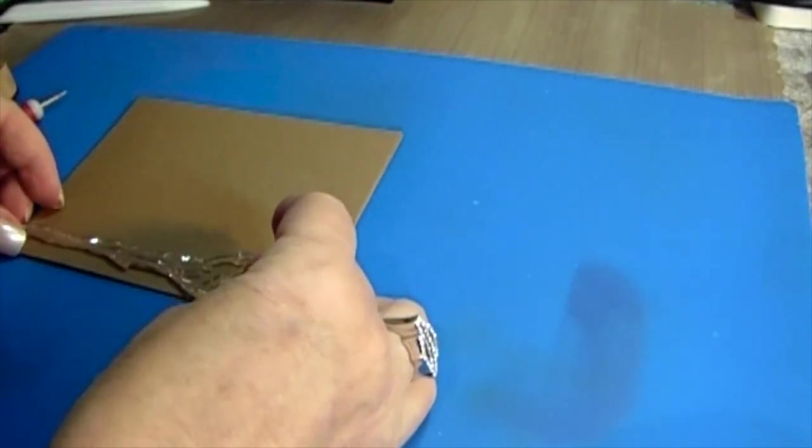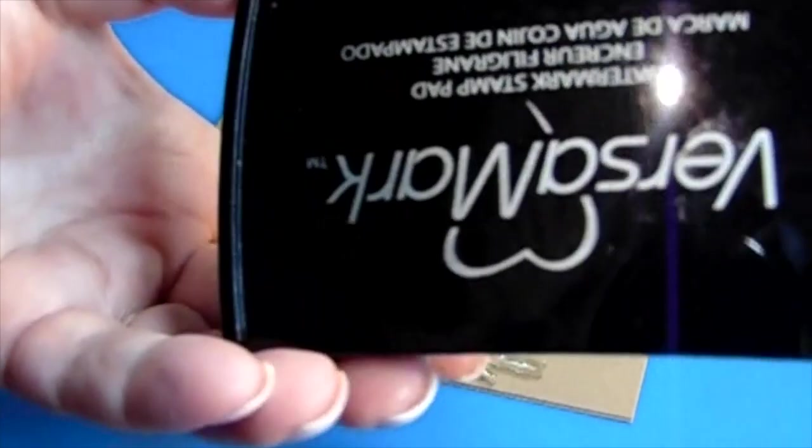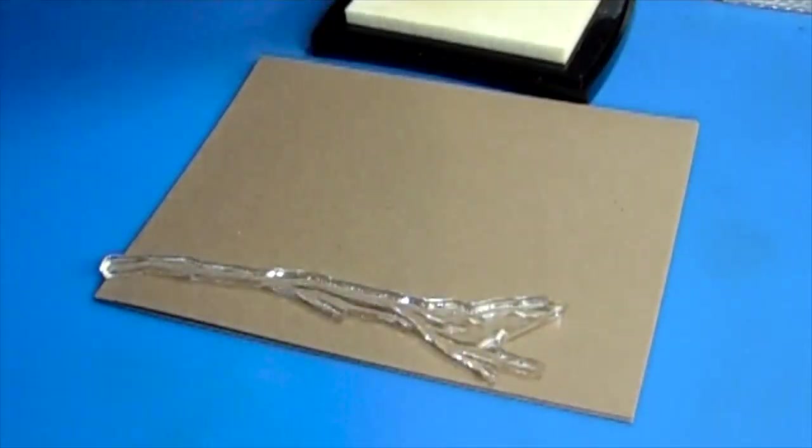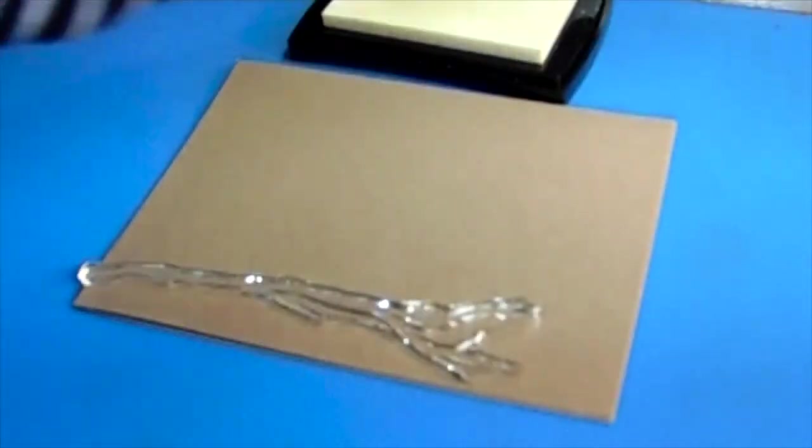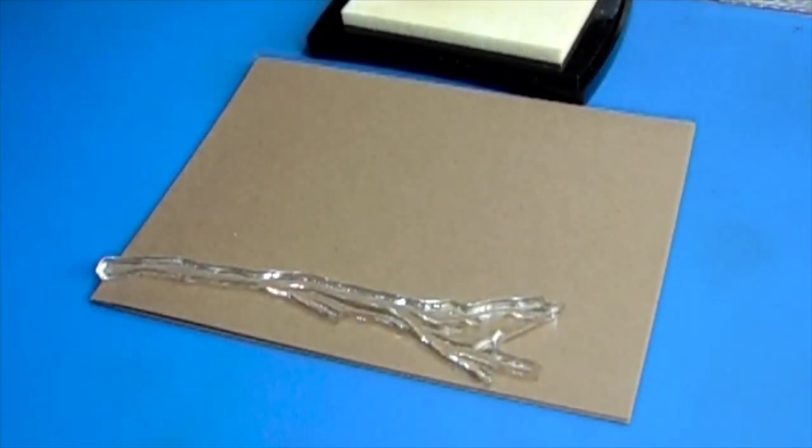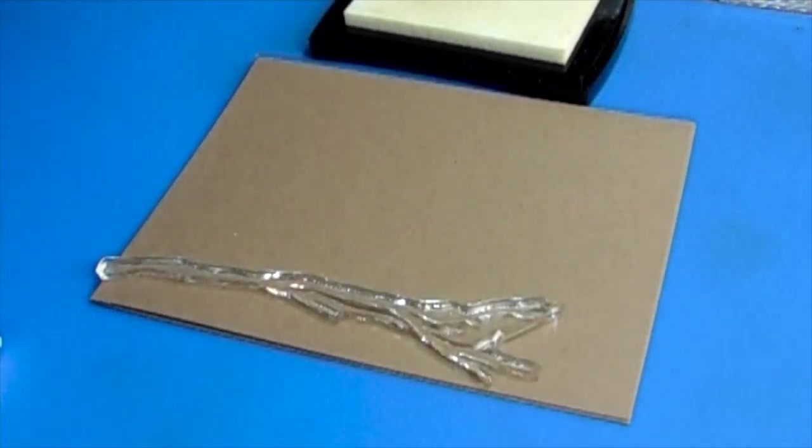The Altenew Cardinal set is wonderful when using Perfect Pearls because it's a four-stamp set. You start out with the base and work your way up to build dimension. You can use sticky ink Versamark or the Perfect Medium by Ranger to set the Perfect Pearls on. I'm going to use both to show you the difference.